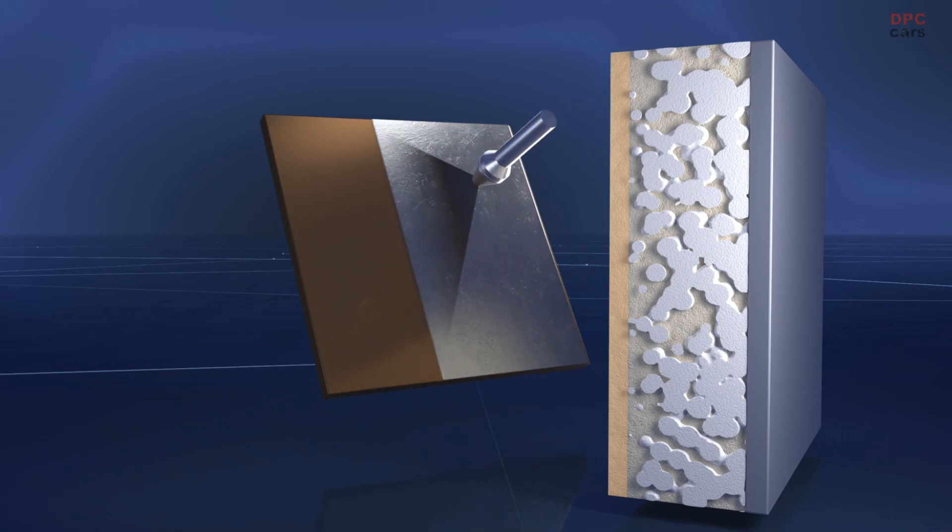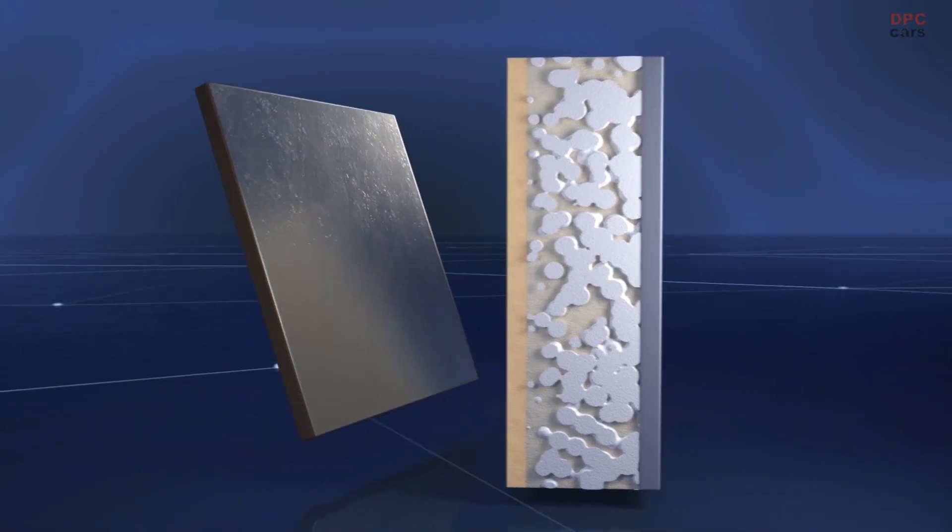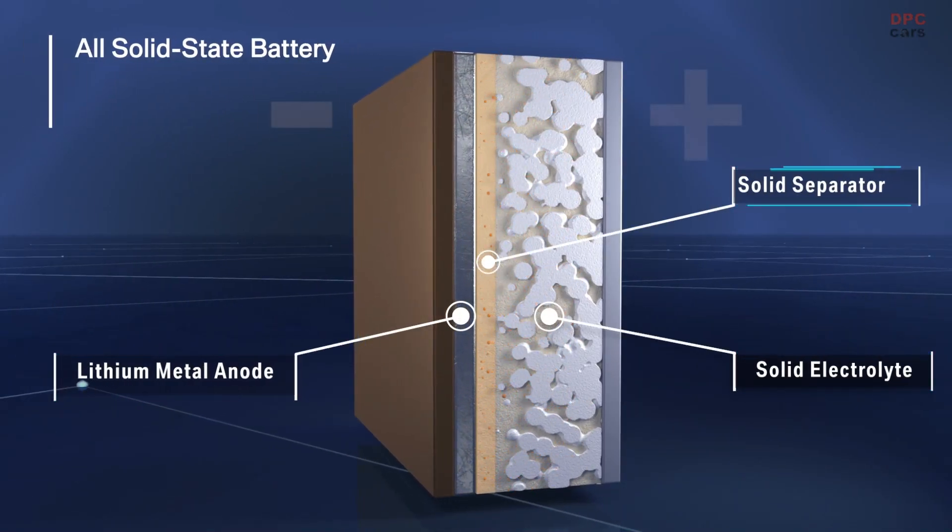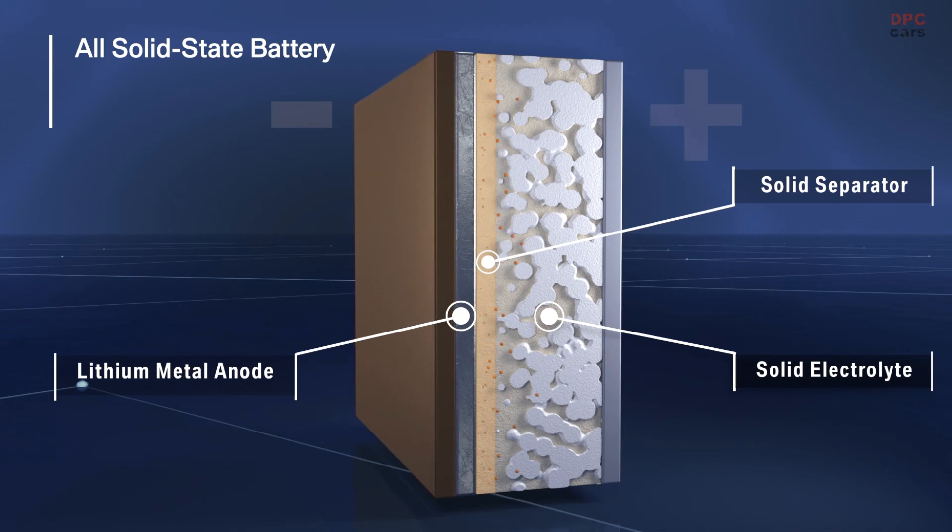A thin layer of lithium metal is employed as anode. During charging, metallic lithium is deposited on the anode and dissolved again during discharging.